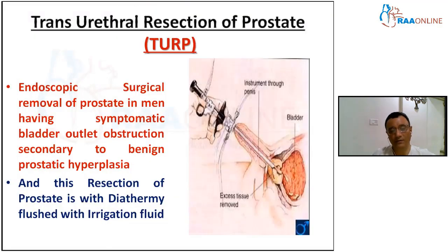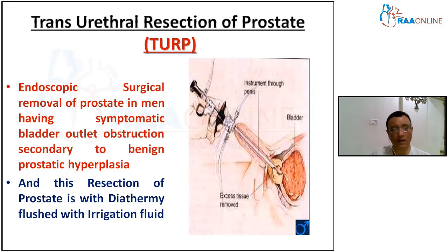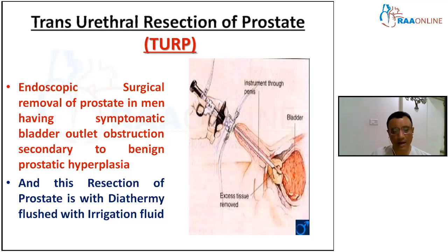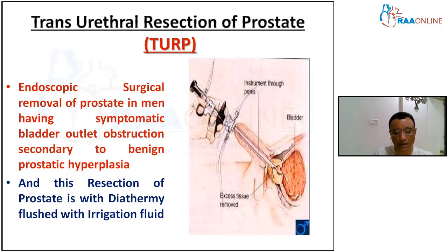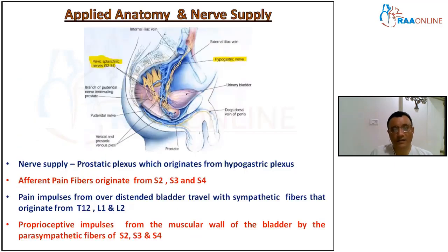Now for the second section: transurethral resection of the prostate — TURP. TURP is the endoscopic surgical removal of the prostate in a man having symptomatic bladder outlet obstruction secondary to benign prostatic hyperplasia. Some patients also require surgical resection of the bladder neck due to urethral stricture. This resection of the prostate is performed with diathermy plus irrigation fluid, so we are using cautery in this operation.